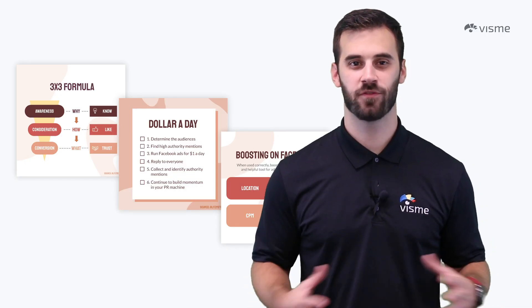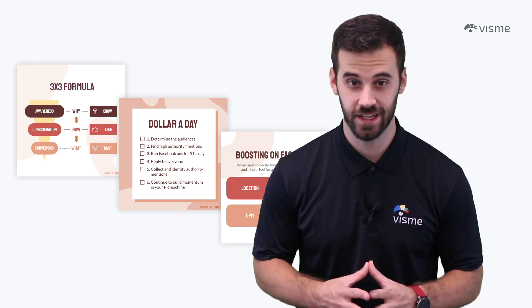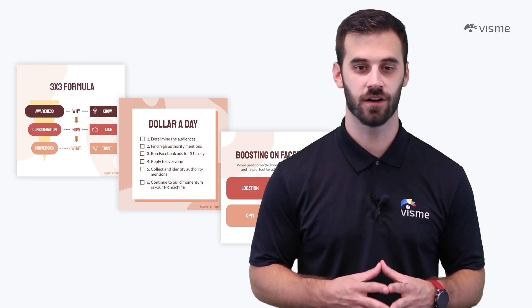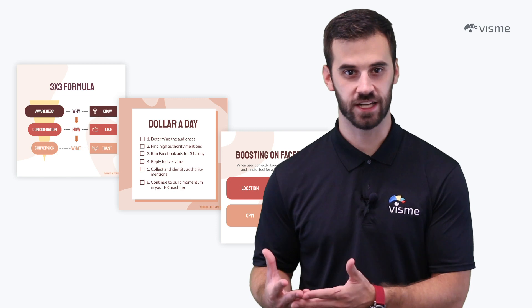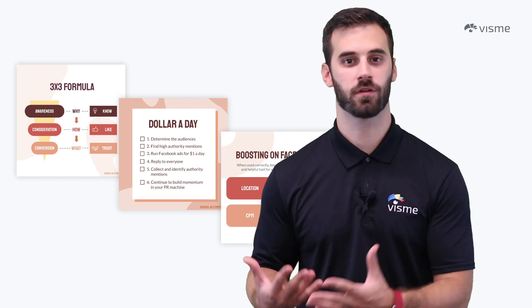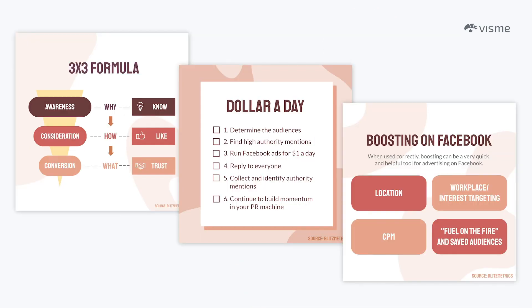And our last tip before diving deeper into how Visme can help — your blog graphics should match the content of the blog. The colors should match, the fonts should be similar, they should follow a similar theme. You created the graphic, so make it appear that way. If your blog is green and yellow, don't create a graphic that's dominantly blue and red. It's a simple rule, but easy to get away from when the creative juices start flowing.